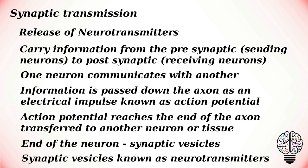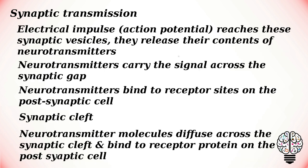Once the action potential reaches the end of the axon, it needs to be transferred to another neuron or tissue. It must cross over the synaptic gap between the pre-synaptic neuron and post-synaptic neuron. At the end of the neuron, in the axon terminal, synaptic vesicles are present which contain chemical messages known as neurotransmitters.